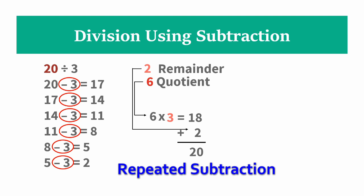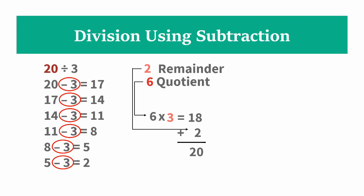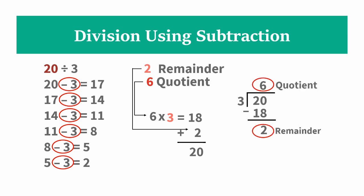We know that if you just use the short division method it will be easier. If we review our division operation, 20 divided by 3: the answer is 6, so 6 times 3 is 18, we subtract, and then 2 is the remainder. That's how you perform division using repeated subtraction.